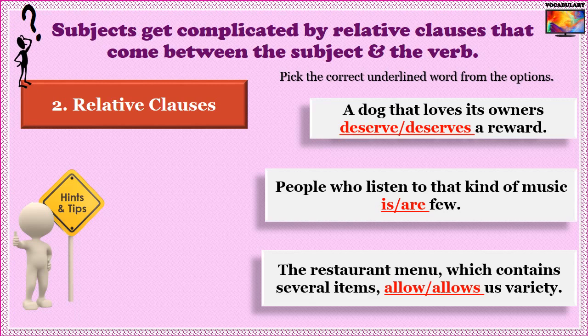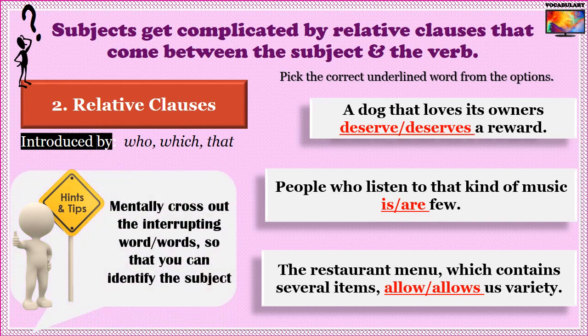Sometimes there could be relative clauses that come between the subject and the verb. It's easy to identify these clauses as they are introduced by a relative pronoun such as 'who,' 'which,' or 'that.' The same trick works here as well — mentally cross out the intervening clause to identify the subject. Any verb within the relative clause also has the same subject, as the relative pronoun ultimately refers to that noun or noun phrase, called the pronoun antecedent.